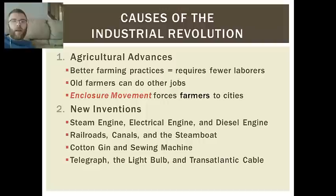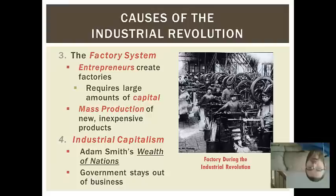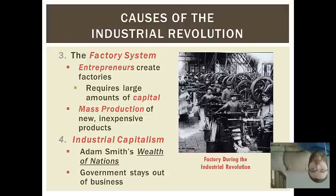Lastly, we have the factory system. You can put industrial capitalism within the factory system or as its own. The factory system is where entrepreneurs create factories. Entrepreneurs are business people — people who have a lot of capital or money — and they create these factories where you'll have several pieces of machinery and a lot of people working to create one item. This mass production of that one item creates new products, but they're also really inexpensive because if you can make them with machines and hire children — like you see in the picture on this slide — you can make things pretty inexpensive.